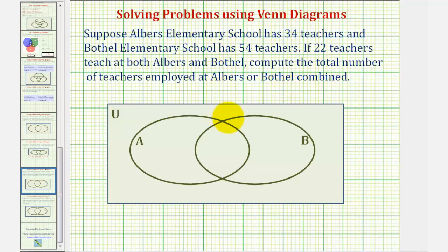Let's solve this using a Venn diagram, where set A represents the set of teachers that teach at Albers, and set B represents the set of teachers that teach at Bothell.